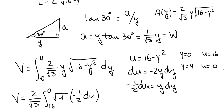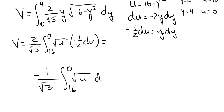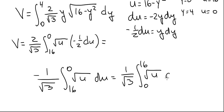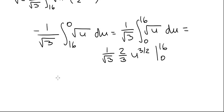Simplifying, the minus one half cancels with the 2, leaving a minus sign, giving minus 1 over square root of 3 times the integral from 16 to 0 of square root of u du. Reversing the limits to remove the minus sign: 1 over square root of 3 times the integral from 0 to 16 of square root of u du. That equals 1 over square root of 3 times two thirds times u to the three halves evaluated from 0 to 16. Plugging in 16: square root of 16 is 4, 4 cubed is 64, 64 times 2 is 128, so this equals 128 over 3 square root of 3 — exactly what we found integrating with respect to x.